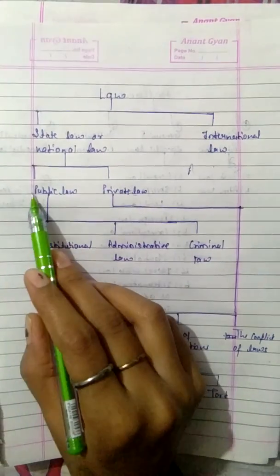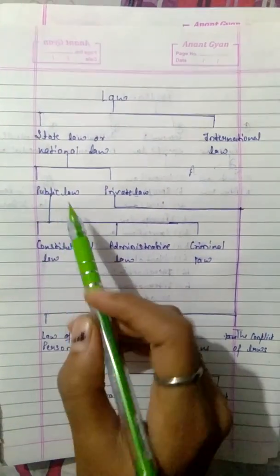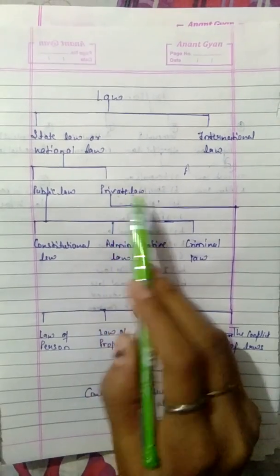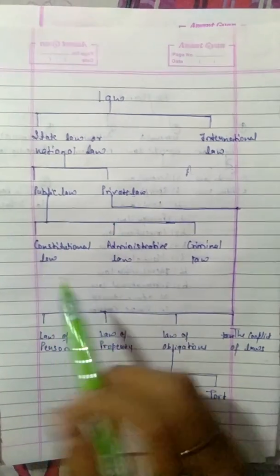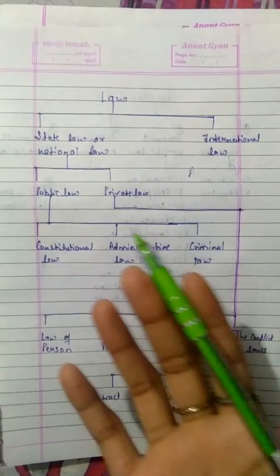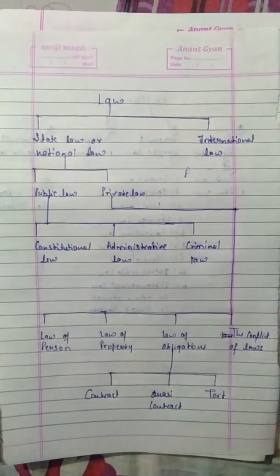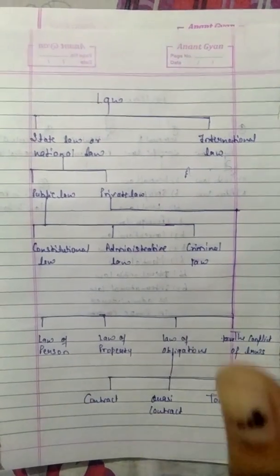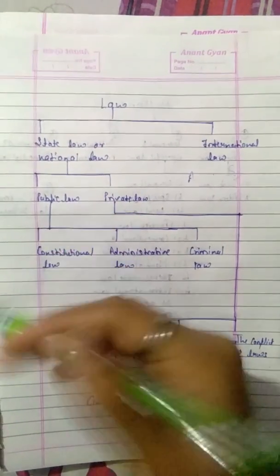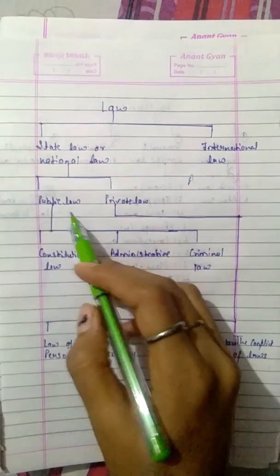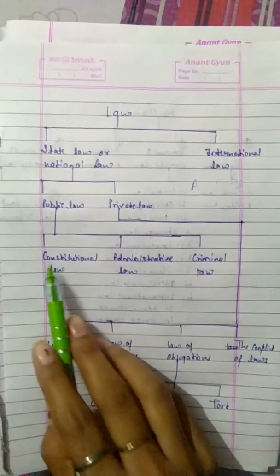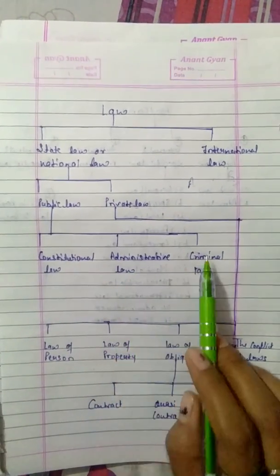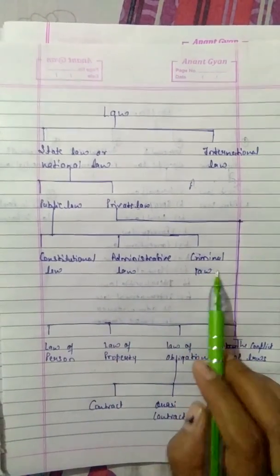In national law, there will be two parts: public law and private law. Public law is where the state is defined, which includes constitutional law, administration law, and criminal law.